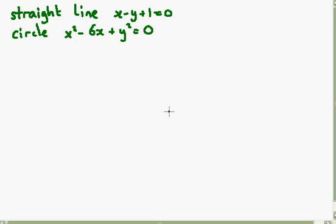First of all, I'm going to rearrange the straight line, the equation of the straight line. So I'm actually going to add y to both sides, and I'm going to rewrite it as y is equal to x plus 1. That will make things a lot easier.